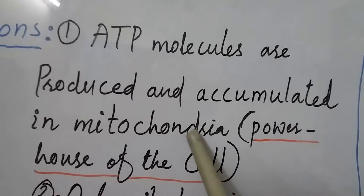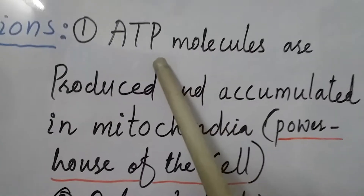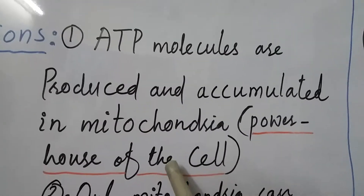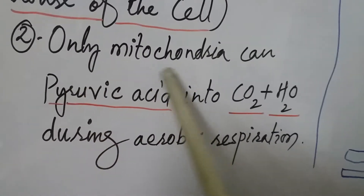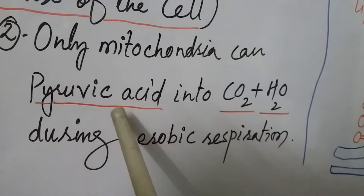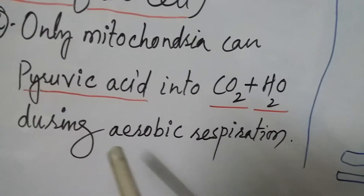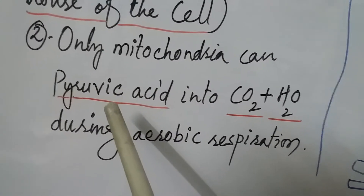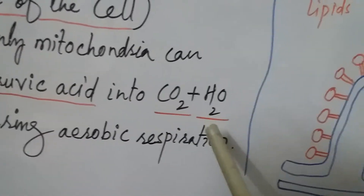The functions of mitochondria include producing and accumulating ATP molecules, hence it is called the powerhouse of the cell. Another function is that mitochondria is the only cell organelle which can convert pyruvic acid into carbon dioxide gas and water molecules during the process of aerobic respiration.